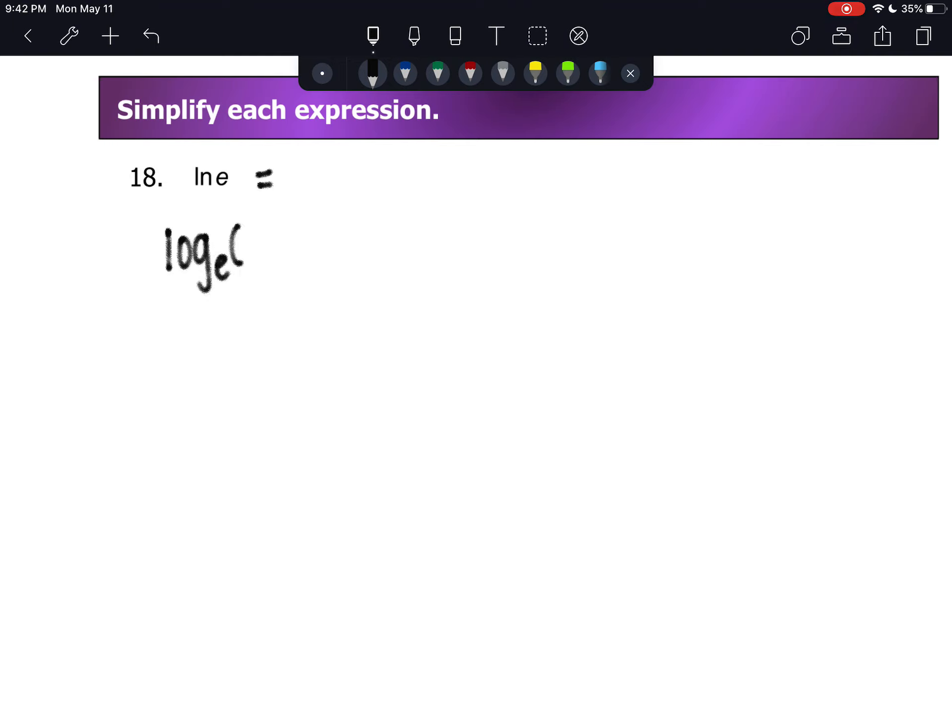If you don't know, it won't take long for you to have that memorized. Natural log is the same thing as log base E. Log base E of E is 1. E to the first power is E. So natural log of E is 1.